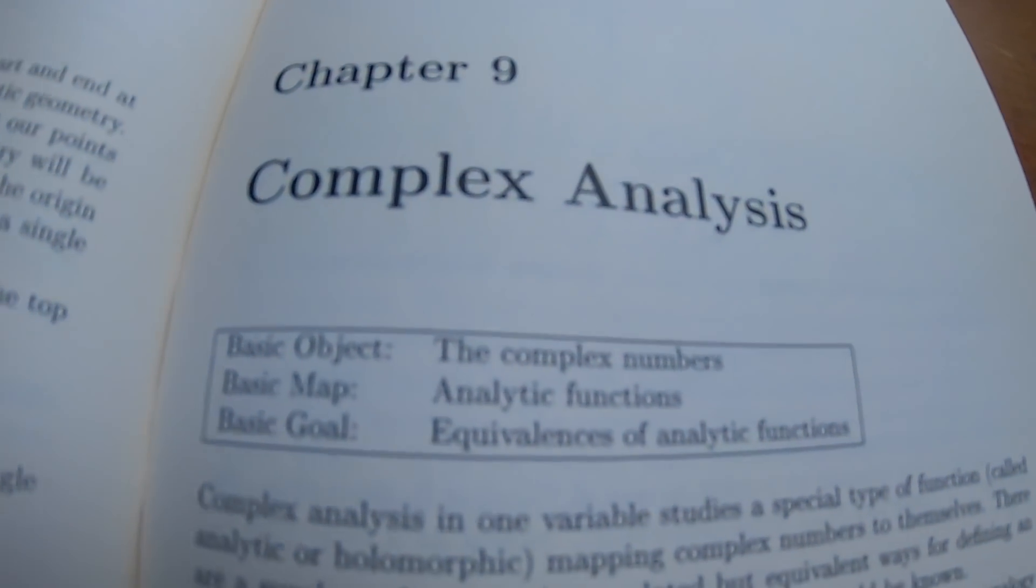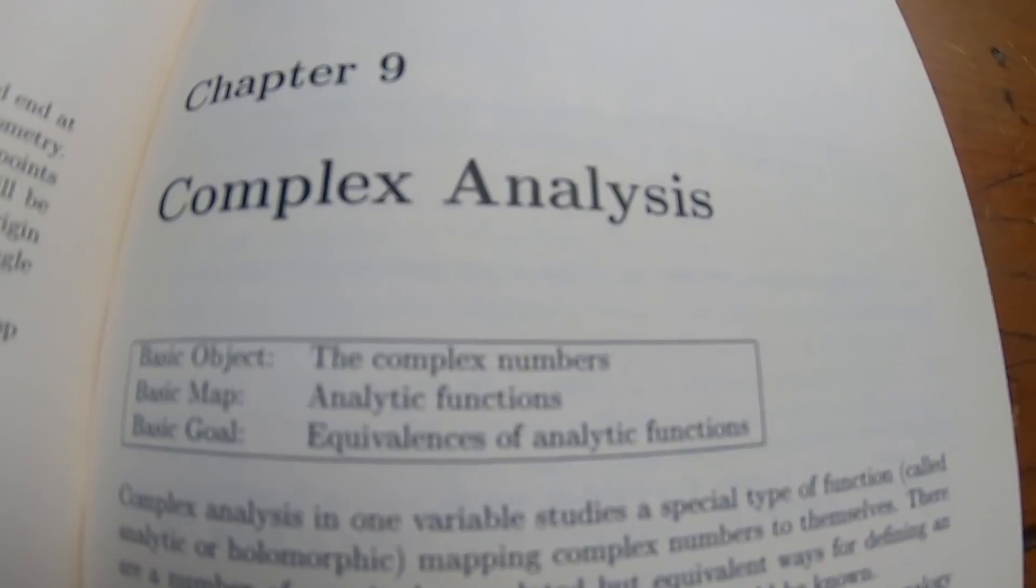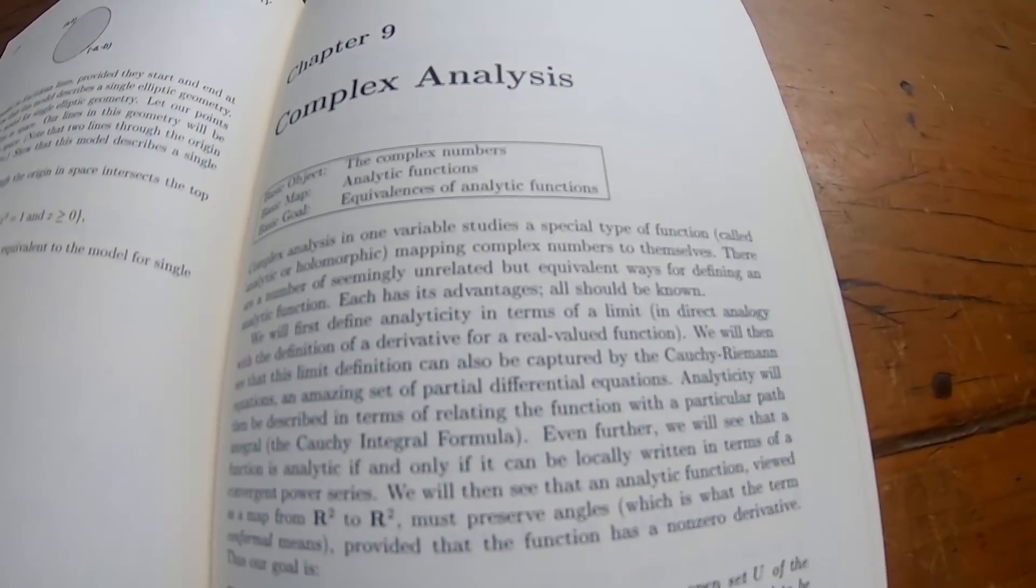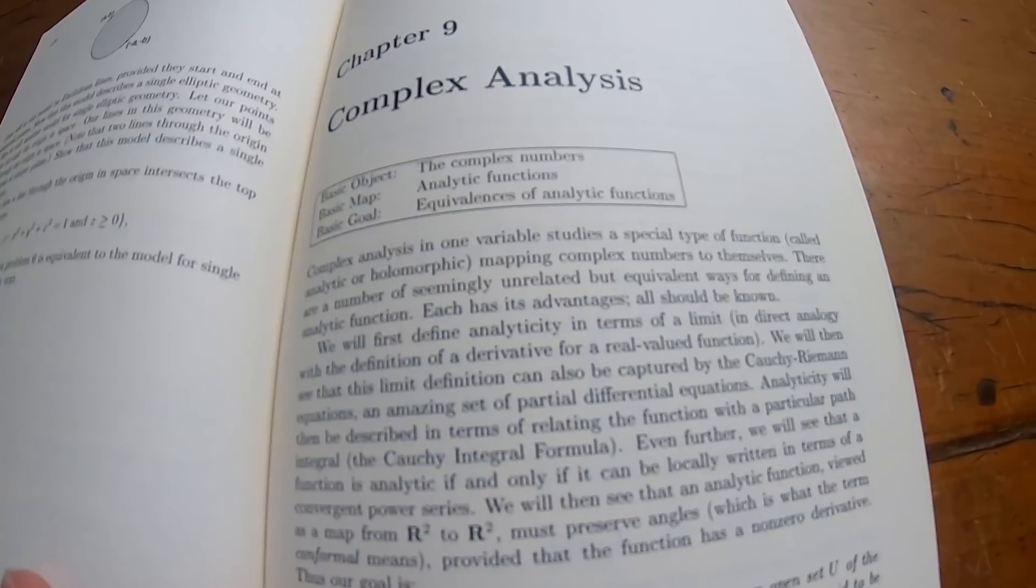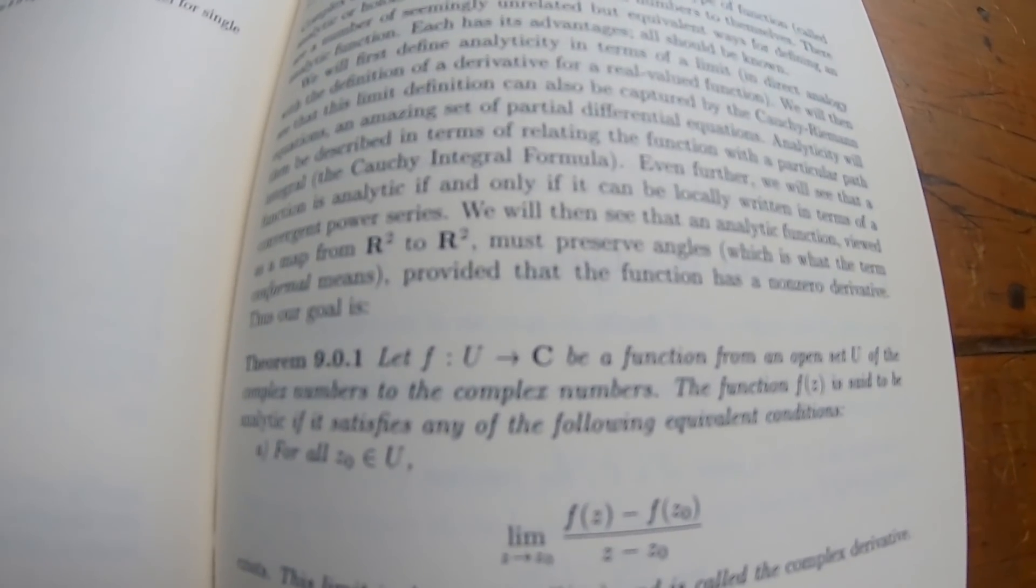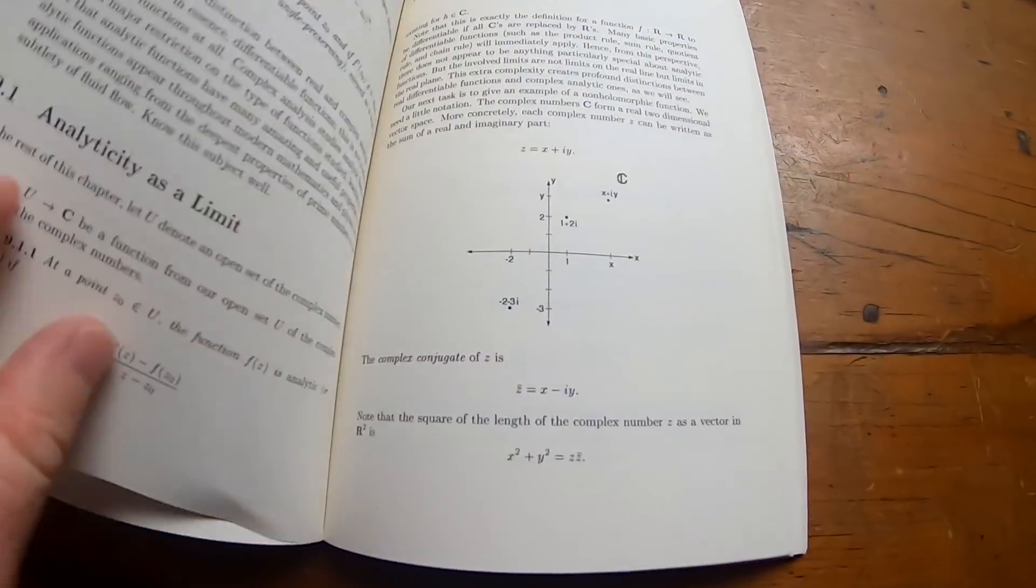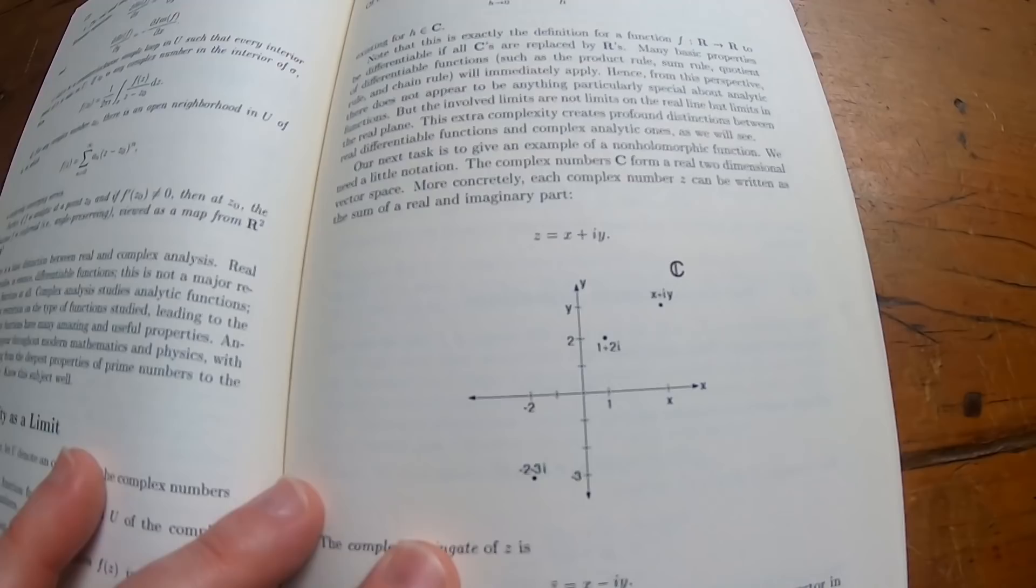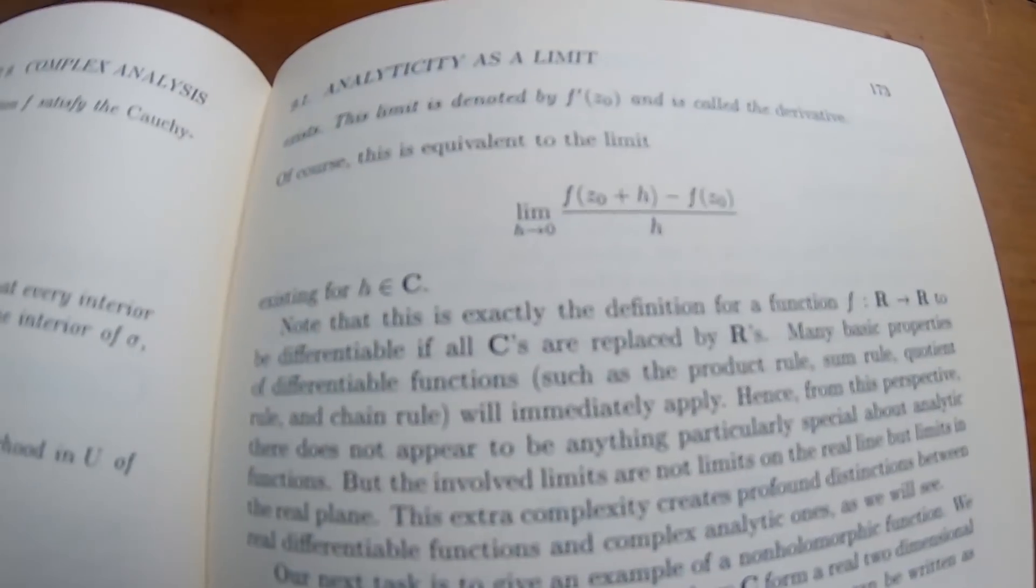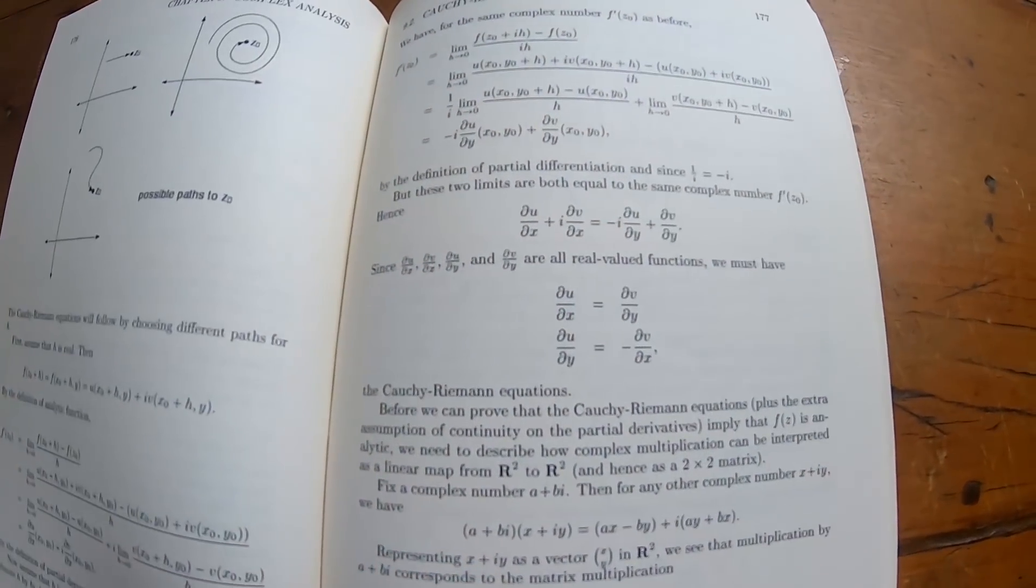This is the section on complex analysis, the complex numbers, analytic functions. And the basic goal is equivalence of analytic functions. So he does a really good job with the complex numbers. And that was kind of foreshadowed at the beginning. Because notice he spent a lot of extra time talking about this when he was going over the brief summary of topics. I think because maybe Mr. Garrity really likes complex analysis. That's my opinion. I don't really know much about him. But he does a very good job with this section.